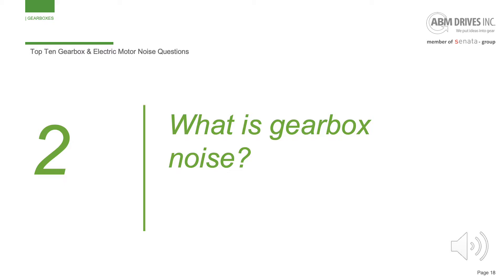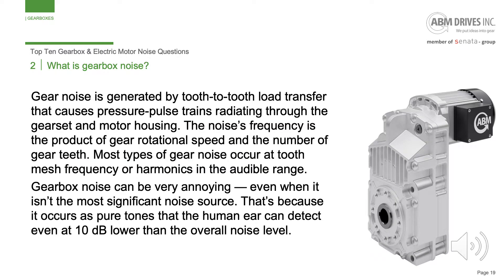Number two: what is gearbox noise? Gear noise is generated by tooth-to-tooth load transfer that causes pressure pulse trains radiating through the gear set and motor housing. The noise's frequency is the product of gear rotational speed and the number of gear teeth. Most types of gear noise occur at tooth mesh frequency or harmonics in the audible range. Gearbox noise can be very annoying, even when it isn't the most significant noise source, because it occurs as pure tones that the human ear can detect even at 10 dB lower than the overall noise level.